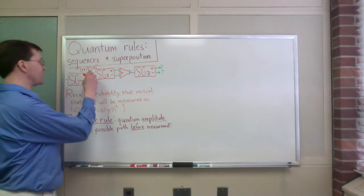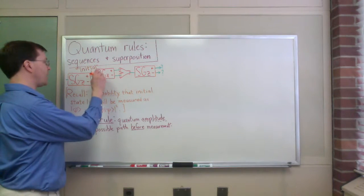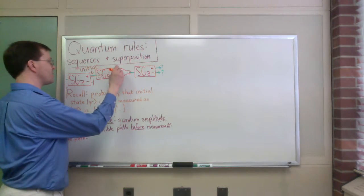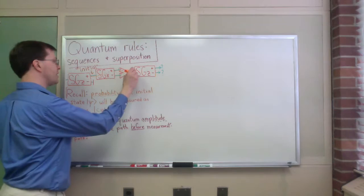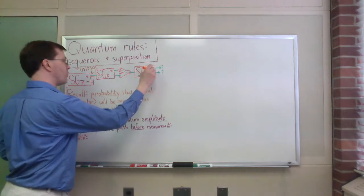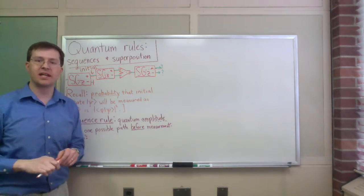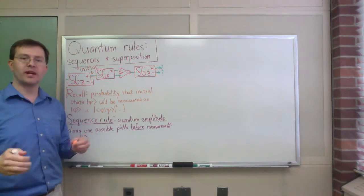I'm going to start with my initial state here and follow it along the plus x path. It gets recombined. And let's just ask the question, how likely is it to come out the plus z state in the end? That's the path I'm going to ask about.